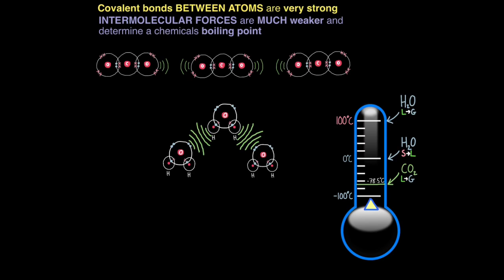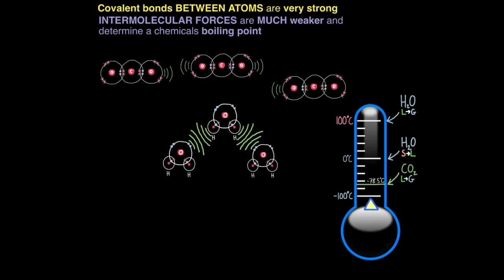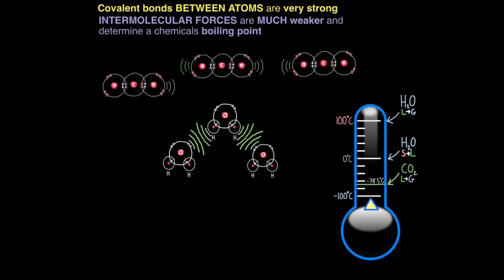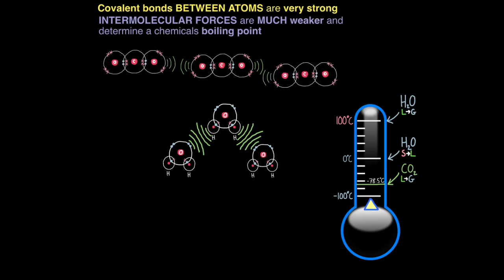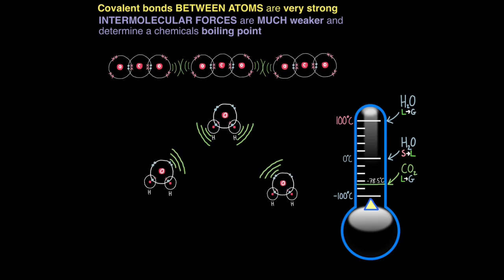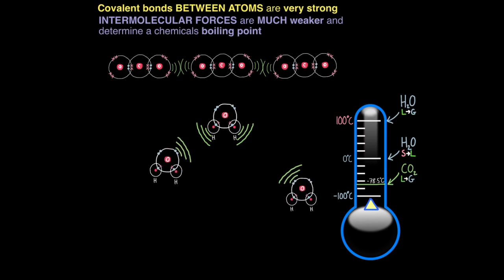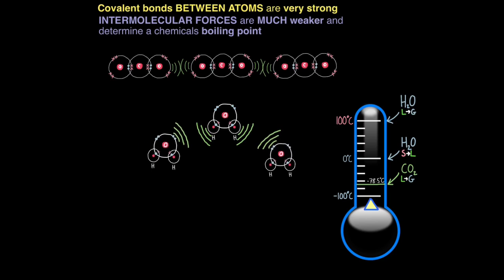Covalent bonds between atoms are incredibly strong — the bonds between oxygen and carbon in CO2, and oxygen and hydrogen in water, are very, very strong and you need a lot of energy to separate those atoms. But the intermolecular forces — inter meaning between, molecular meaning molecules — the forces between the molecules are much weaker and determine a chemical's boiling point. The intermolecular forces between carbon dioxide molecules are weaker than the intermolecular forces between water molecules.